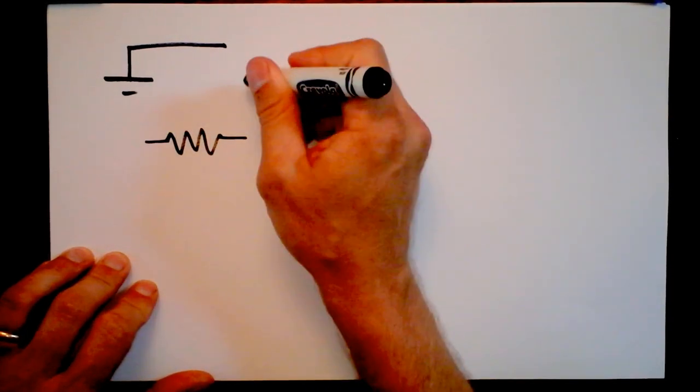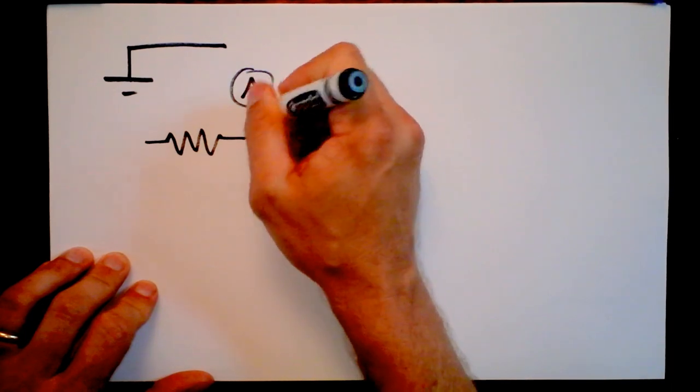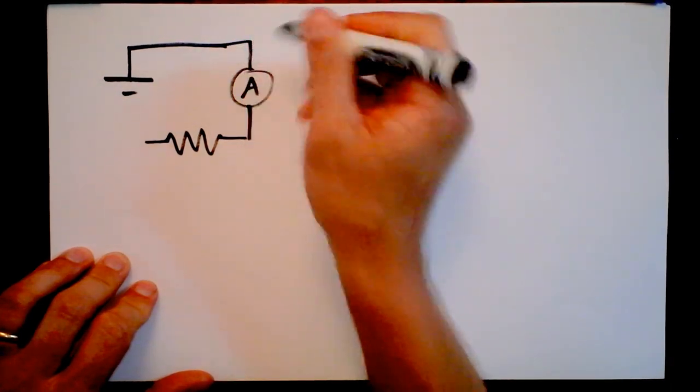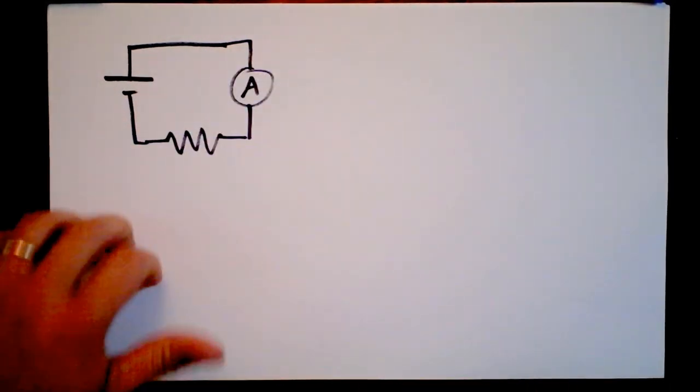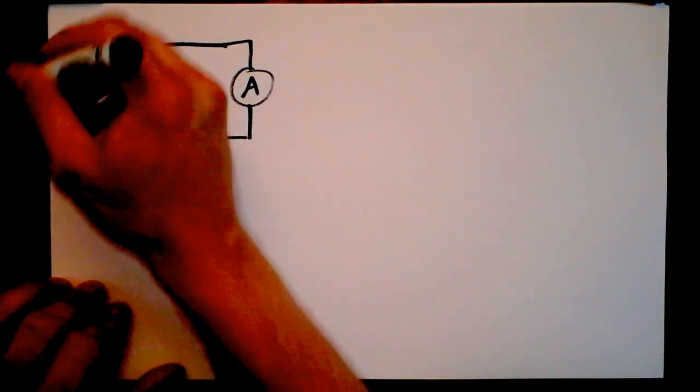And we're probably going to need to know how much current we've got going through it, and we're also going to need to know the voltage drop across it. So the voltage drop then could be measured as the voltage of the battery, right?